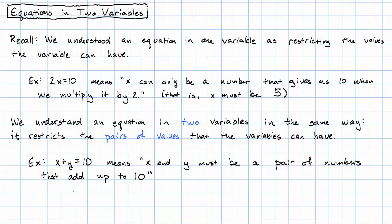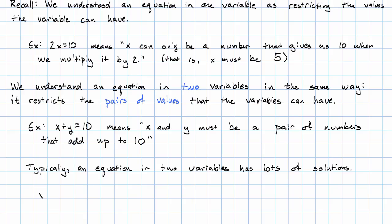So this is going to have lots of solutions. In this example, we could have x equals 3 and y equals 7, for example, because 3 plus 7 is 10. Or we could have x is negative 5, y is 15, because negative 5 plus 15 equals 10.